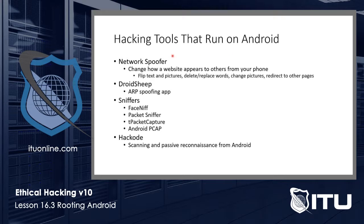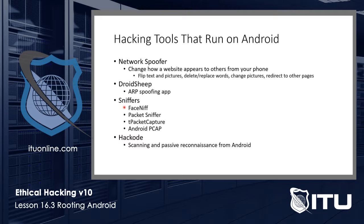There are a number of hacking tools that run on Android. The reason why is that Android, being Linux, allows you to have access down to the hardware level, which Apple does not permit. You can run Network Spoofer, which is basically a prank tool — you're intercepting what people think they see on a website, changing their view of text and pictures, flipping it upside down, replacing or deleting words, changing pictures, redirecting to other pages. There's Droid Sheep, a little more serious — you can do some ARP spoofing. There are a number of sniffers, and there is something called Hack Code, which is for scanning and passive reconnaissance from an Android phone.